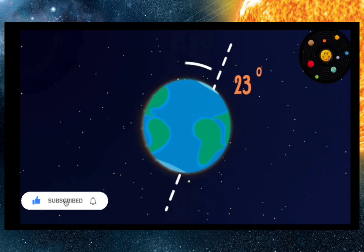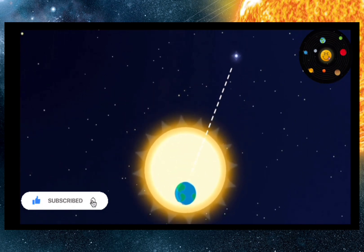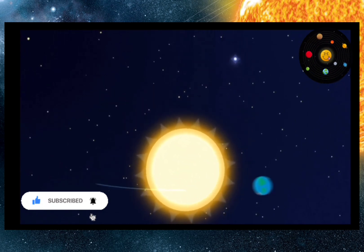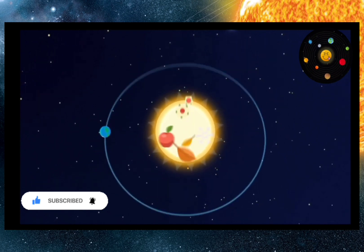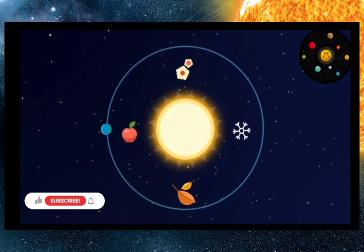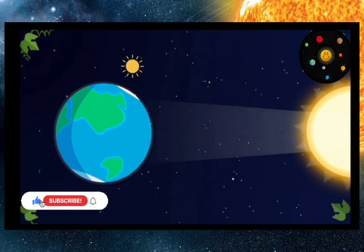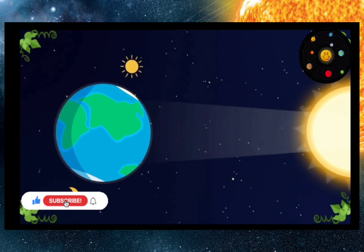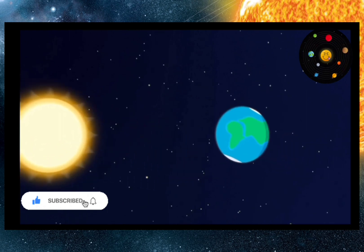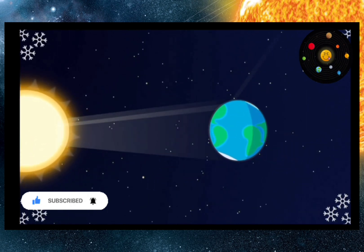This axis is tilted and is always pointed in one direction, towards Polaris. Because of this tilt, the Earth positions its sides toward the Sun differently in each season. When solar rays fall straight, it gets hotter and summer comes. If the rays fall at an angle, the heat is lower and winter comes.